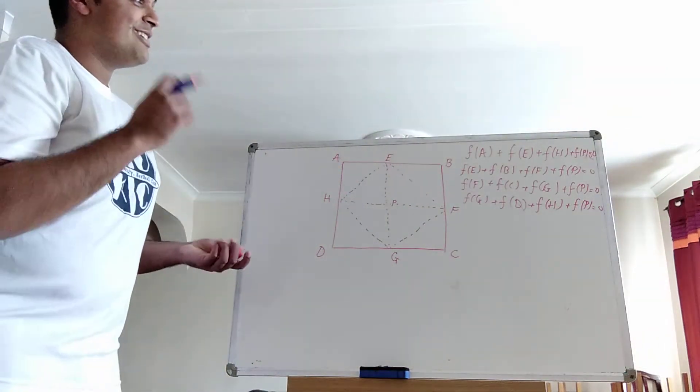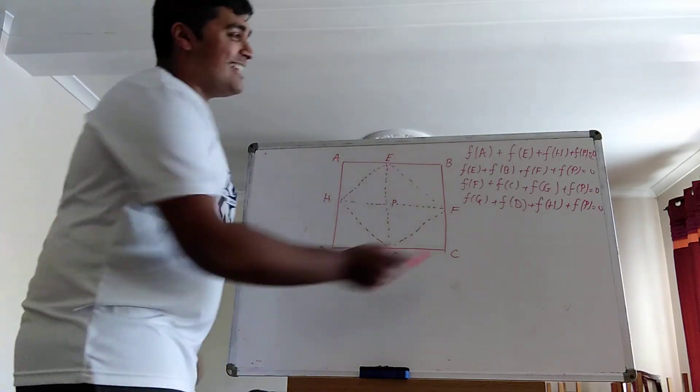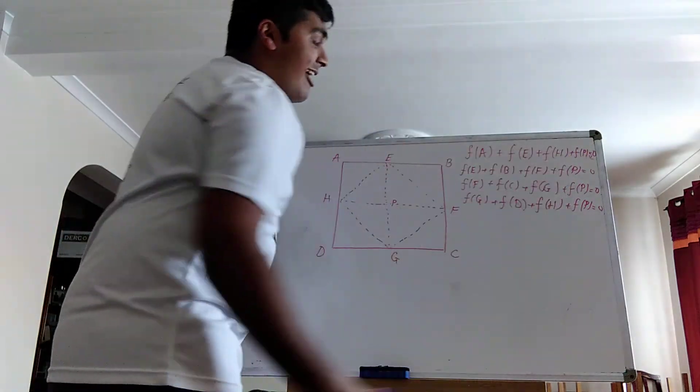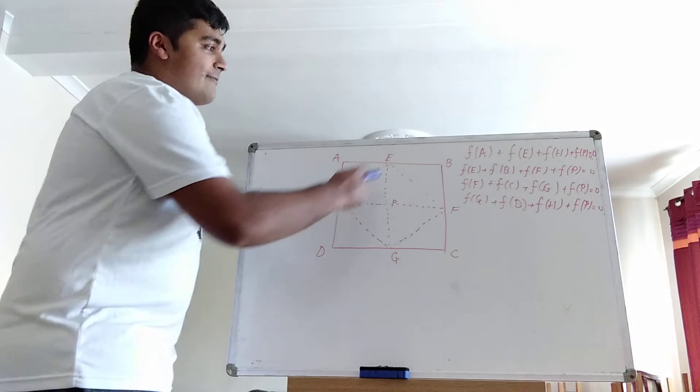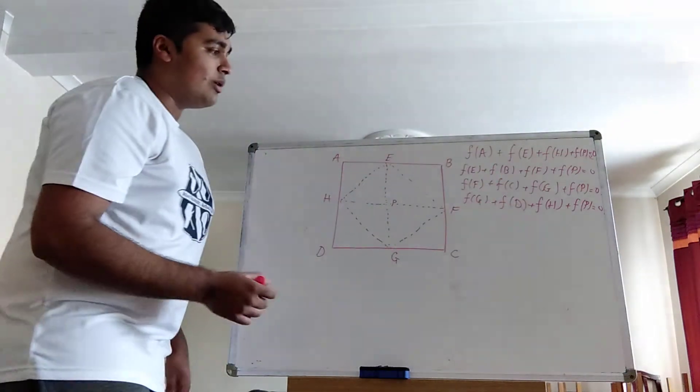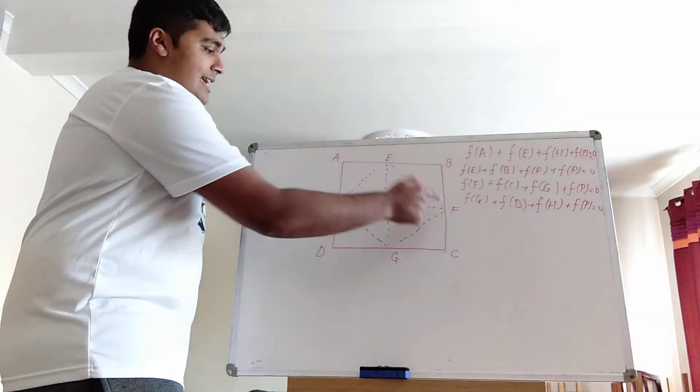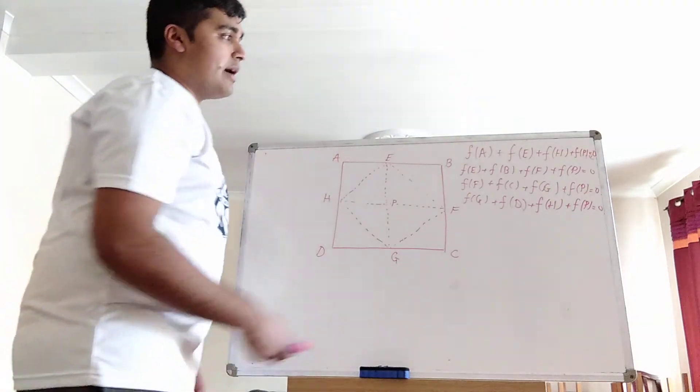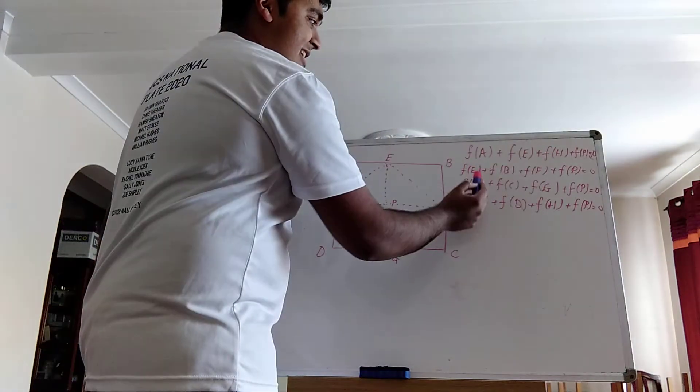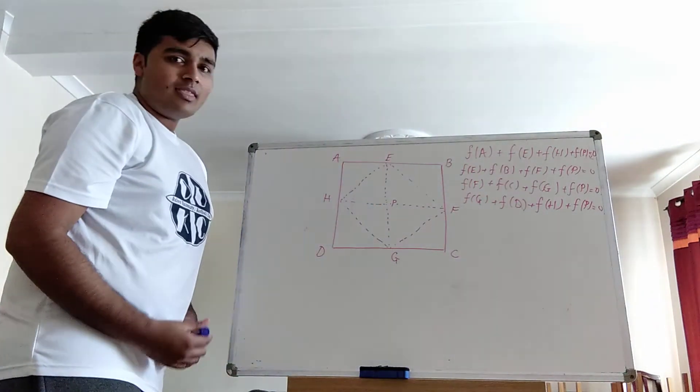So before I carry on, some things to notice. In each of these equations here, we have an f(p). And I've deliberately written that at the end to highlight that. And also we're going to have a, b, c, and d occurring once. a there, b there, c there, and d there, all occurring once. And then e, f, g, and h all occurring twice. e, f, g, h and then h, e, f, g.